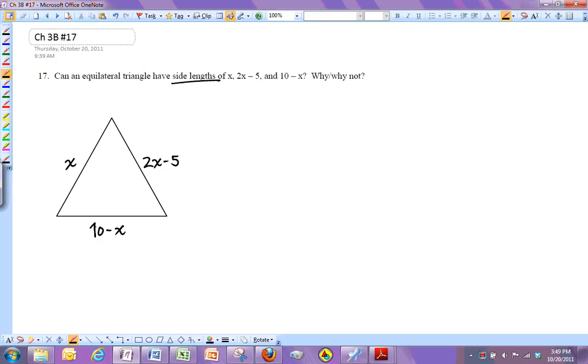So let me pick two sides. If it's equilateral, all of them are the same, so I'm going to pick any two of them. So I'll pick x and 2x minus 5. And if those two sides are the same, then they should be equal. So if I solve for this, I'm going to do minus 2x, minus 2x.